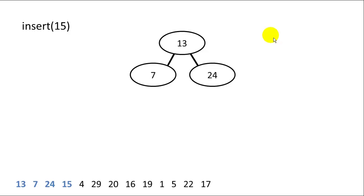Now we insert 15. Since 15 is greater than 13, it goes in the right child — we sort those items and 15 is inserted. Next we insert 4. Since 4 is less than 13, it goes in the left child, we sort those items, and 4 has been inserted.